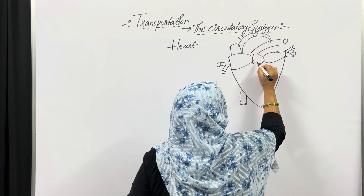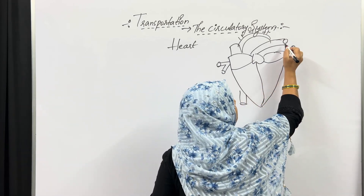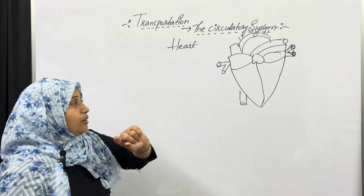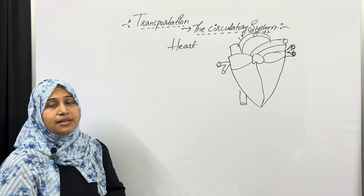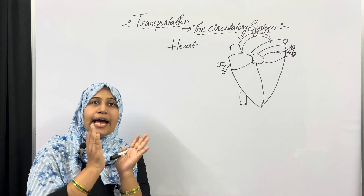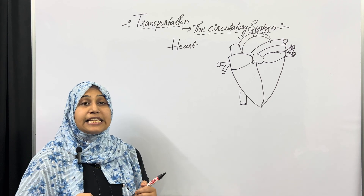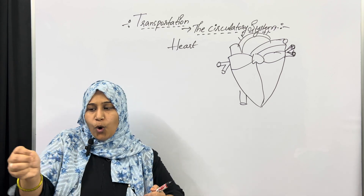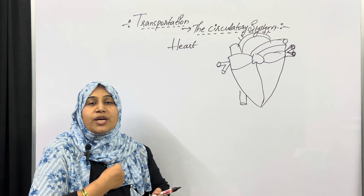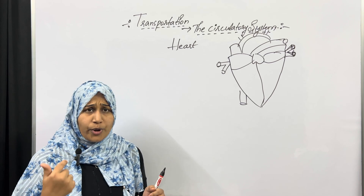I am drawing a rough diagram to explain the heart. The main organ of the transportation or circulatory system is the heart. It is slightly triangular in shape and is situated in between the lungs. The size of the heart is fist-sized — if you hold your hand and make a fist, that is equal to the size of your heart.